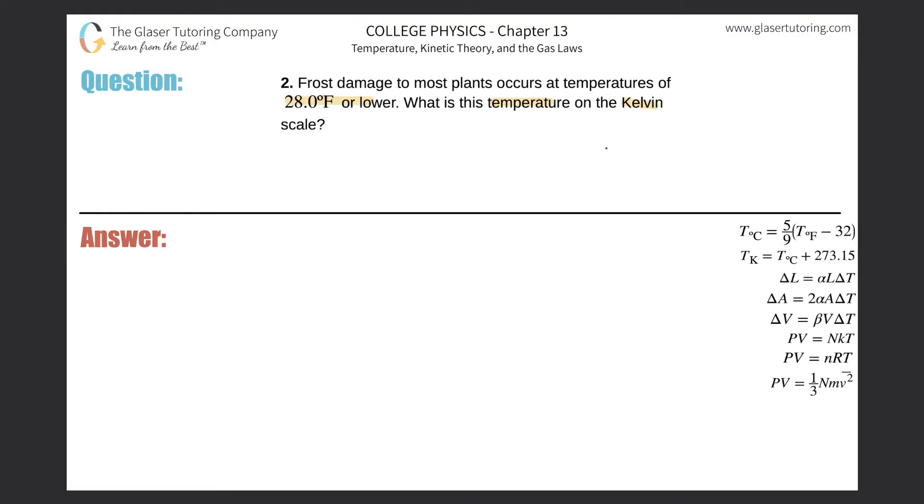A good problem-solving tip is start with the question it's asking us for Kelvin. So I want to think of a mathematical formula that tells me Kelvin. I have my formula over here on the right-hand side. It says the Kelvin temperature will be equal to the Celsius temperature plus this constant of 273.15.